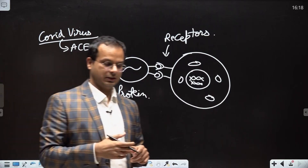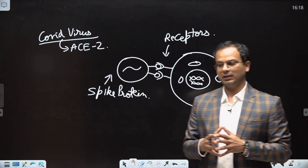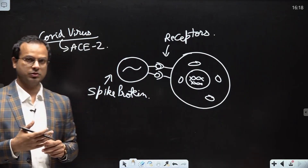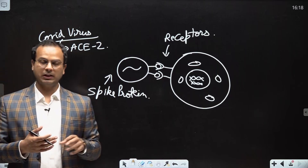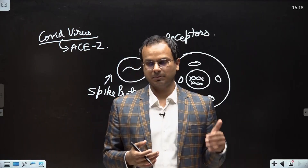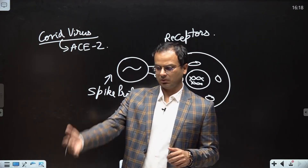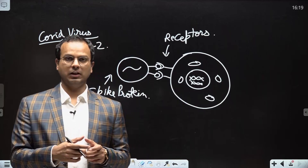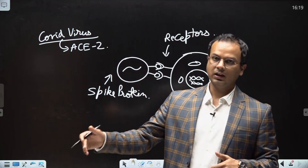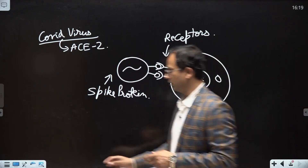ACE2 stands for angiotensin converting enzyme. It is a receptor on the surface of many cells in the body — most prominently on the surface of lung cells. Therefore, COVID-19 virus attacked the lung cells the most because the ACE2 receptor was present there. Similarly, in recent news there is Nipah virus, which attacks a particular receptor called ephrin B2 and B3. You can look out in the news — if you find that a virus attacks a particular receptor or cell, note it down in your current affairs copy. This is the concept related to this question.